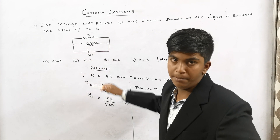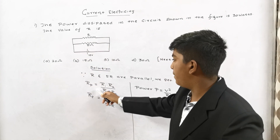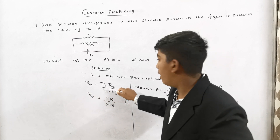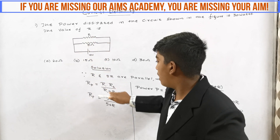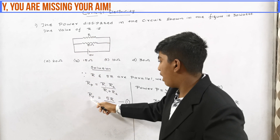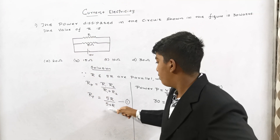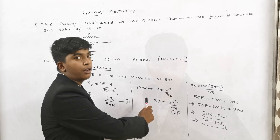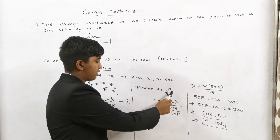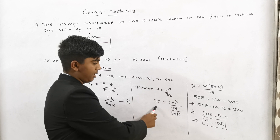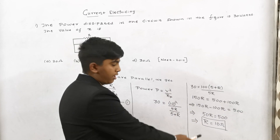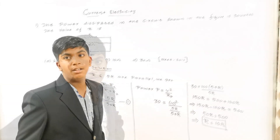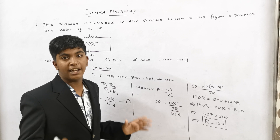R and 5 ohms are in parallel. Therefore Rp equals R1·R2 divided by R1 plus R2. Here R1 is R and R2 is 5, so Rp equals 5R divided by 5 plus R. The formula for power is P equals V² divided by R. Therefore P is 30, V is 10, and R is 5R divided by 5 plus R. After simplification we get R equal to 10 ohms. Therefore option C is the correct answer.